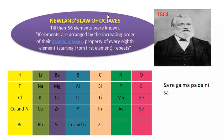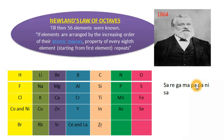Why did he give this name 'Octave'? Because he was fond of music. 'Oct' means 8. Octave is actually the Sargam — Sa Re Ga Ma Pa Dha Ni Sa — and when this Sargam repeats, the eighth note is the same as the first note. He saw this same repetition in the classification of elements, which is why he named his law the Law of Octaves.